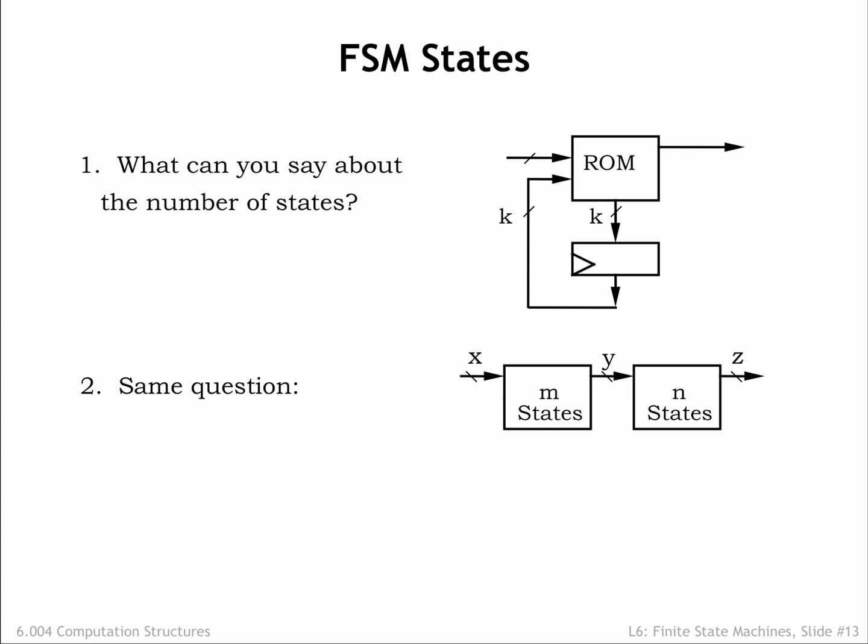Suppose we connect two FSMs in series, with the outputs of the first FSM serving as the inputs to the second. This larger system is also an FSM. How many states does it have? Well, if we don't know the details of either of the component FSMs, the upper bound on the number of states for the larger system is m times n.